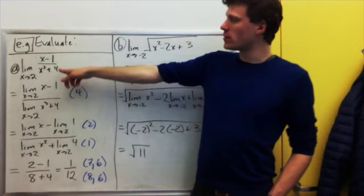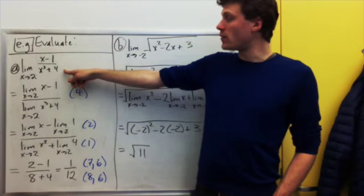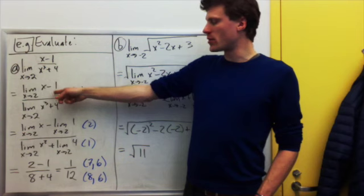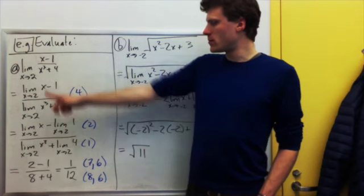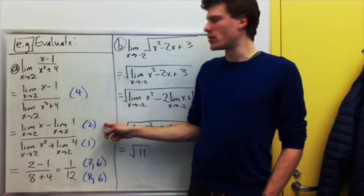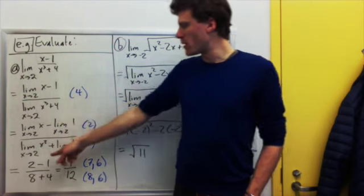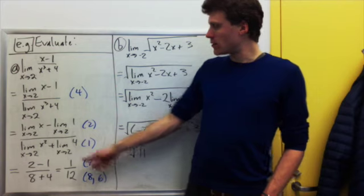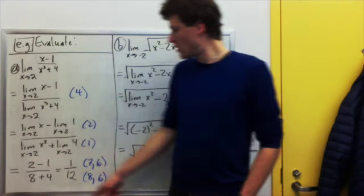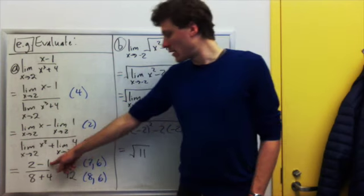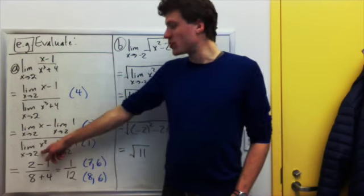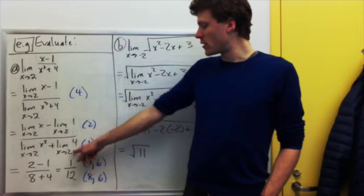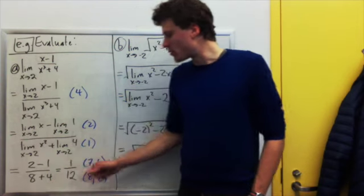This set of rules lets us compute limits for polynomials, rational functions, and algebraic functions. Example a: evaluate the limit as x approaches 2 of (x − 1)/(x³ + 4). Since we have a ratio, we break it into a limit of ratios. The top is a difference, so rule two breaks it into a difference of limits. The bottom is a sum, so rule one breaks it into a sum of limits. Then we plug in: limit of x is 2, limit of 1 is 1, limit of x³ is 2³ = 8, limit of 4 is 4. We get (2 − 1)/(8 + 4) = 1/12.